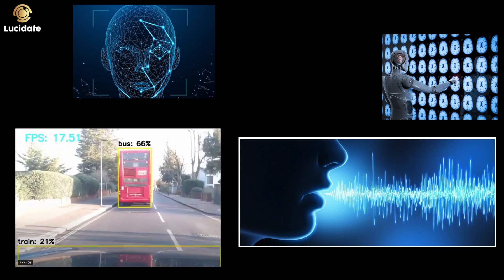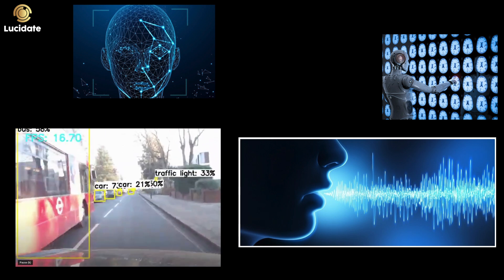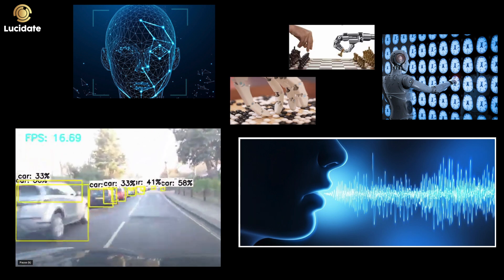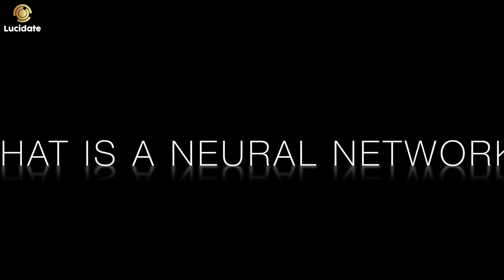They've been used to surpass human endeavor at games of skill like chess and go. But what is a neural network?